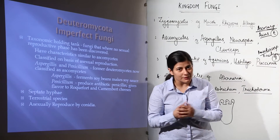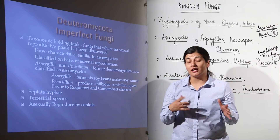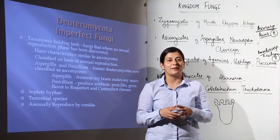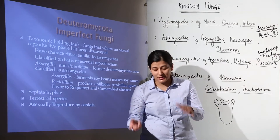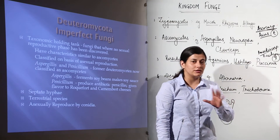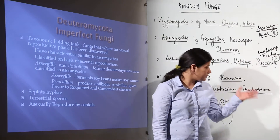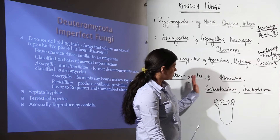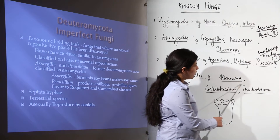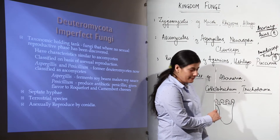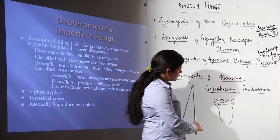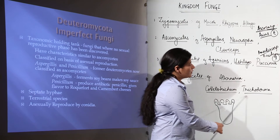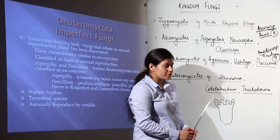Though it is imperfect fungi, we can't get away without discussing the examples I had missed. I just skipped past the lesson thinking we had covered it, but we didn't discuss the examples. So what are the examples? The first one is Alternaria, the second one is Colletotrichum, and the third one is Trichoderma.